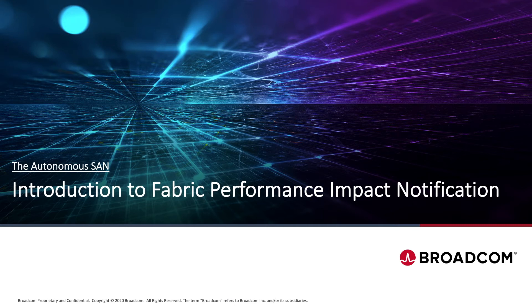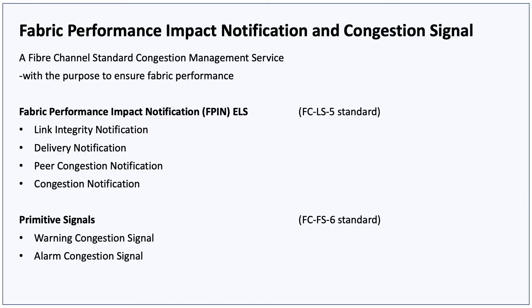Welcome to this brief introduction to Fabric Performance Impact Notification. Fabric Performance Impact Notification and Congestion Signal are enhancements to the Fibre Channel Standard, created with the purpose of having a congestion management service in the Fibre Channel Fabric, which can notify connected devices of fabric performance issues either due to the device's own behavior, devices they are communicating with, or the fabric itself, in order for the devices to take a corrective action.